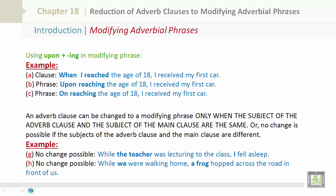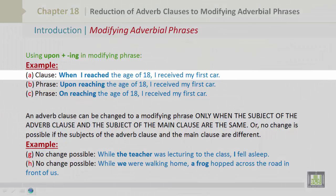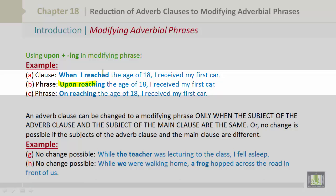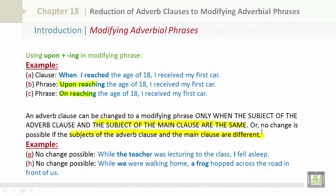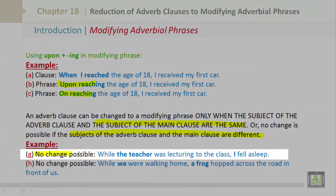Continuing with the introduction: use 'upon plus -ing' in the modifying phrase. For example, the clause 'When I reached the age of 18, I received my first car' becomes 'Upon reaching the age of 18, I received my first car,' or 'On reaching the age of 18, I received my first car.' An adverb clause can be changed to a modifying phrase only when the subject of the adverb clause and the subject of the main clause are the same. No change is possible if the subjects are different.